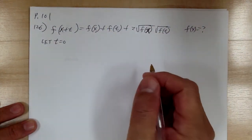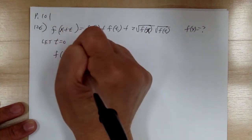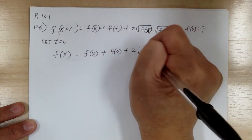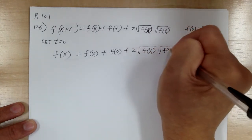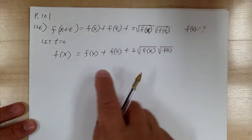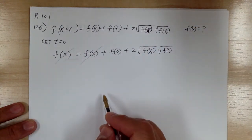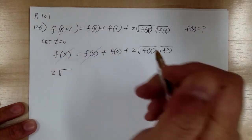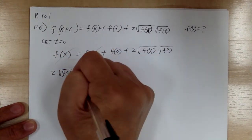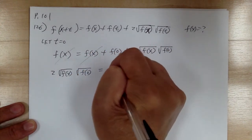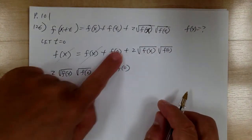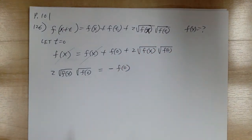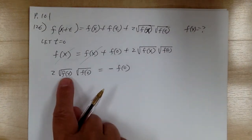Setting t equal to 0: f of x equals f of x plus f of 0 plus 2 times square root of f of x times square root of f of 0. The f of x cancels from both sides. Moving the remaining terms over and flipping the equation: 2 times square root of f of x times square root of f of 0 equals negative f of 0.